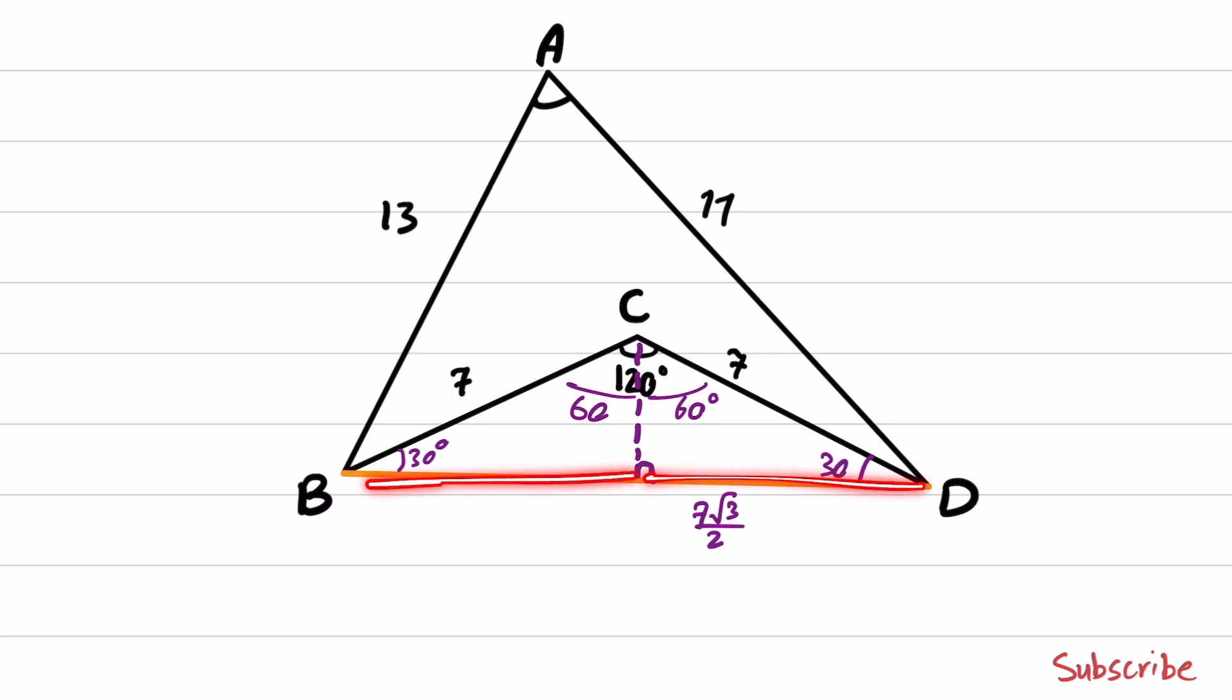And the same is used here, and you will have 7 times square root of 3 over 2. Therefore, BD becomes 7 times square root of 3.